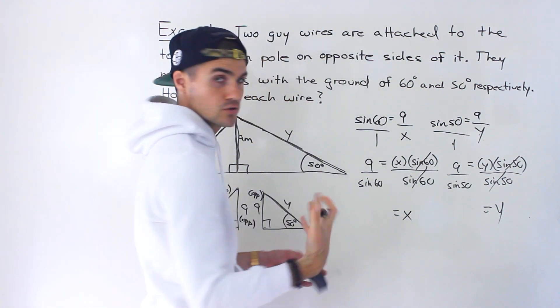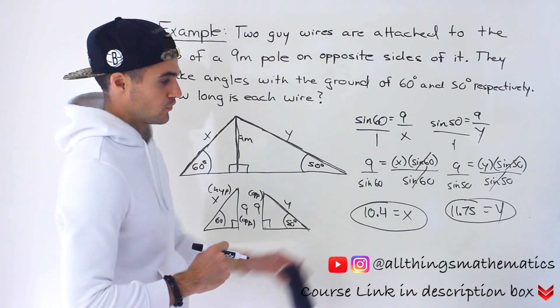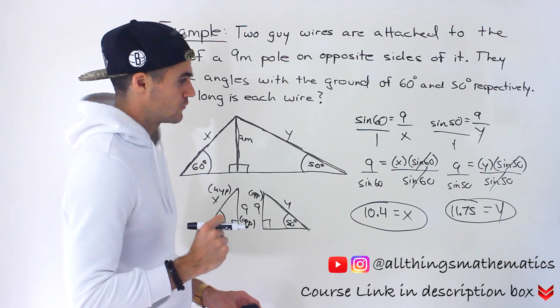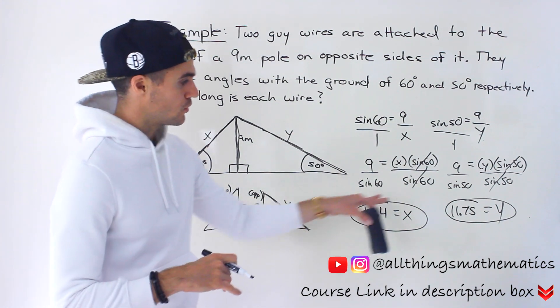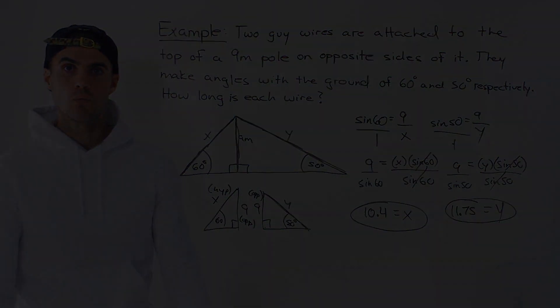And so you just have to do those two calculations. And when you do those calculations, you'd get 10.4 for X and 11.75 for Y. And so those are the two final answers. Those are the lengths of the wire. Now, we'll be back here.